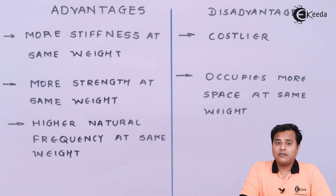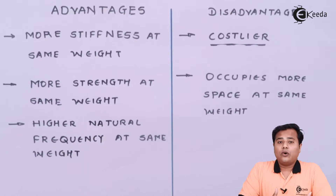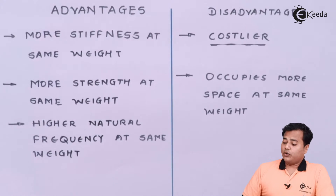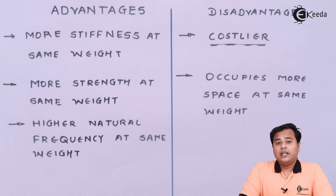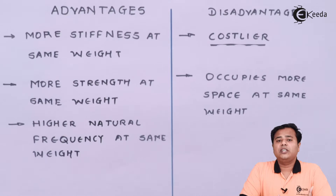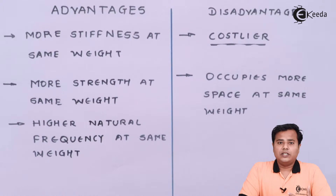Hollow shafts have two important disadvantages. First, they are costlier — drilling out the hollow portion and the larger outer area increase both material and production costs. Second, they occupy more space at the same weight. The outer diameter of a hollow shaft is greater than that of a solid shaft of equal weight, making the machine bulkier. Apart from these, there are no other significant disadvantages.